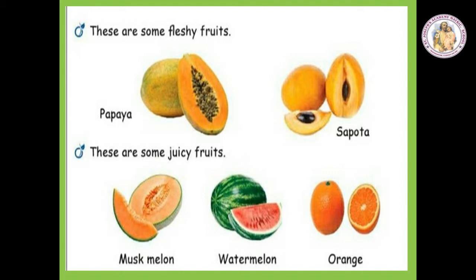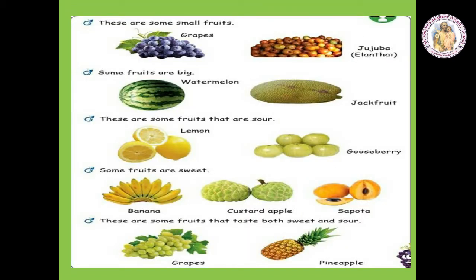Now we are going to learn about fleshy fruits and juicy fruits. Papaya and Sapota are some examples of fleshy fruits. Muskmelon, Watermelon, and Orange are some examples of juicy fruits. These are some small fruits — for example, Grapes, Jujube (Elendai). Some fruits are big, like Watermelon and Jackfruit. Some fruits are sour — Lemon, Gooseberry. Some fruits are sweet — Banana, Custard Apple, Sapota. Some fruits taste both sweet and sour — Grapes, Pineapple.